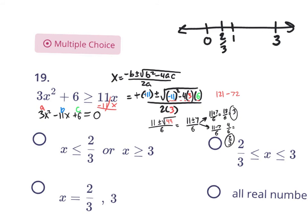I'm going to test the value of 0, which is clearly on the outside. Plug in 0: 0 squared is 0 plus 6 is 6, and 11 times 0 is 0. So is 6 greater than or equal to 0? Yes. The 0 did work, which means that the answers are out here on the outside.